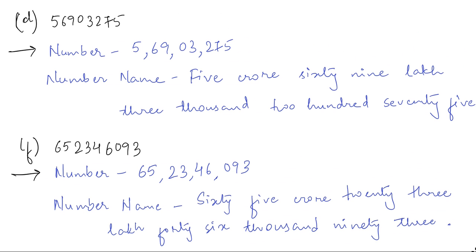Next, let us look at number (d). Here we have 56903275. After putting commas as per the Indian place value chart, you will get 5,69,03,275. The number name is five crore sixty-nine lakh three thousand two hundred seventy-five.